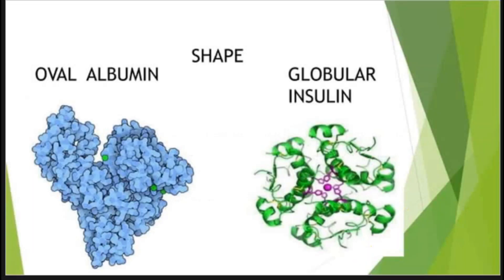Proteins have various shapes depending upon the presence of primary, secondary, and tertiary structure. The shape of the protein is very important because it determines its activity. Proteins will bind to their receptors and undergo certain chemical reactions depending upon their shape. For example, albumin has an oval shape containing primary, secondary, and tertiary structure, while insulin has a globular shape.